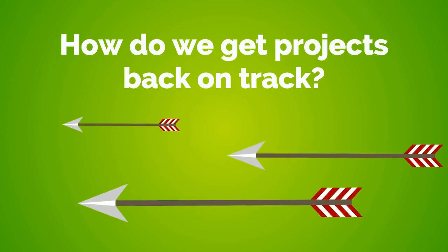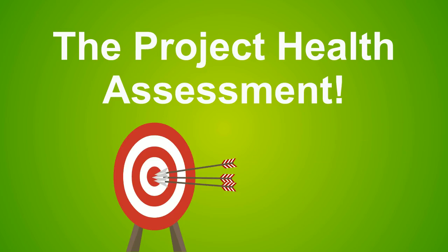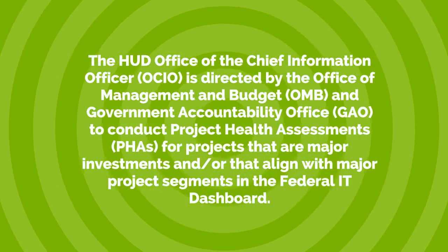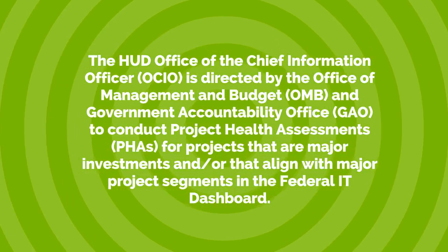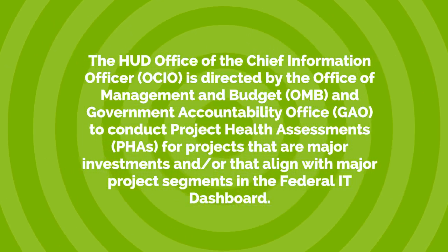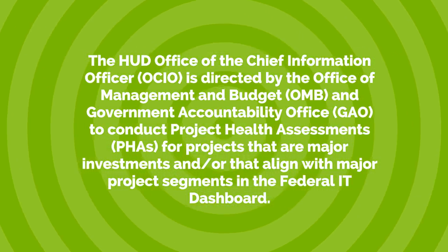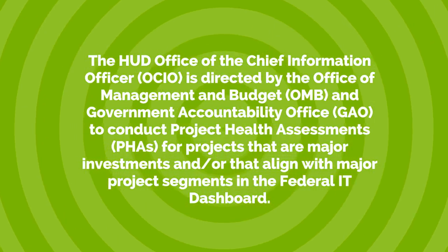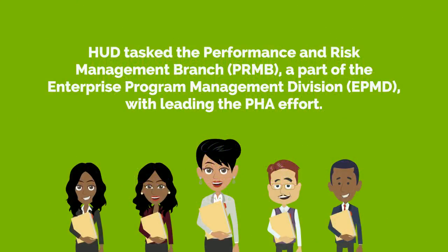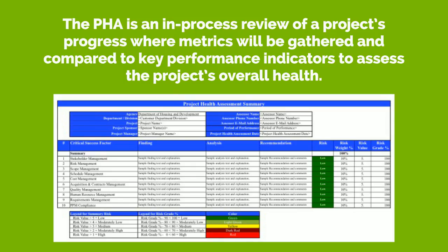How do we get projects back on track? The Project Health Assessment. The HUD Office of Chief Information Officer is directed by the Office of Management and Budget and Government Accountability Office to conduct Project Health Assessments for projects that are major investments and/or that align with major project segments in the Federal IT Dashboard. HUD tasked the Performance and Risk Management Branch, a part of the Enterprise Program Management Division, with leading the PHA effort. The PHA is an in-progress review of a project's progress where metrics will be gathered and compared to key performance indicators to assess the project's overall health.